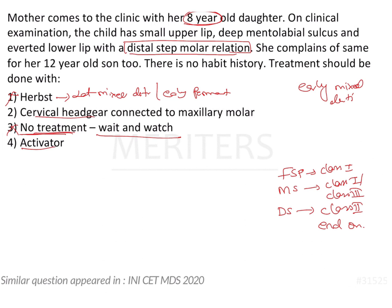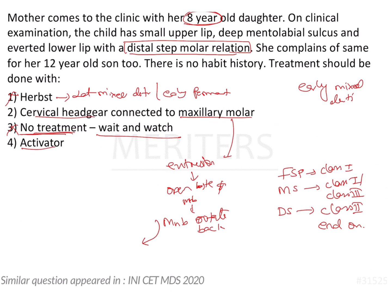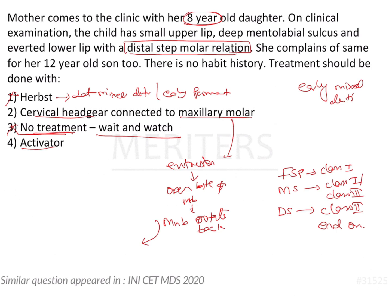Between cervical headgear and activator, how do we identify which appliance to use? Here, the question has not mentioned which jaw is at fault — whether the maxilla is prognathic or the mandible is retrognathic. To identify this, we look at the effect of the appliance on the dentition. A cervical headgear connected to the maxillary molar will cause extrusion of the molars, opening the bite and increasing the mandibular plane angle. This means the mandible will rotate backwards, which will further worsen the Class II. So we cannot give a cervical headgear.